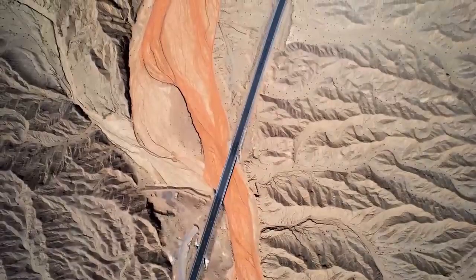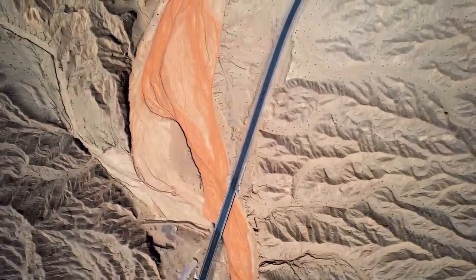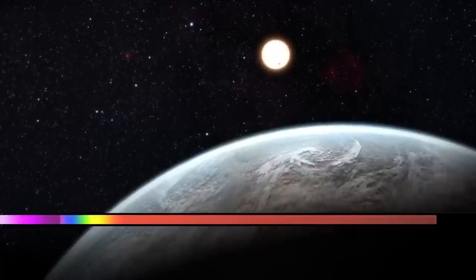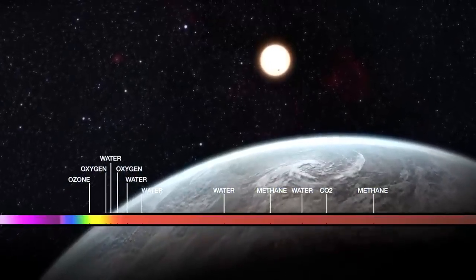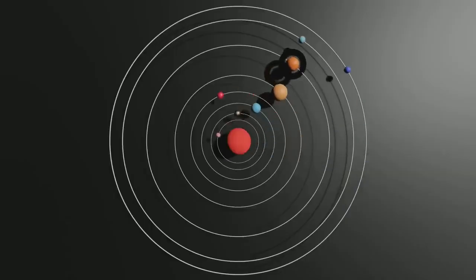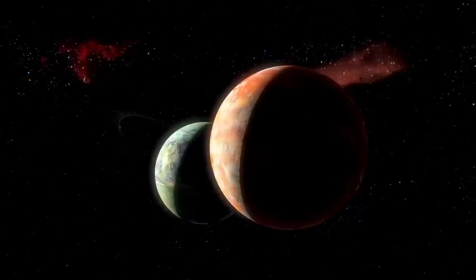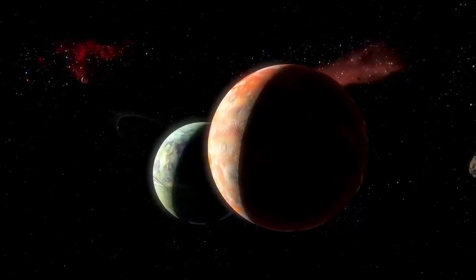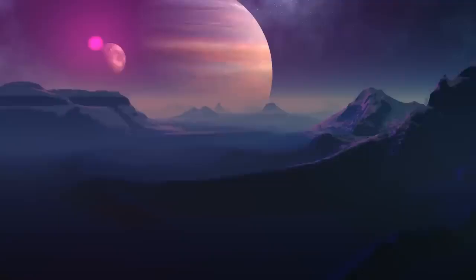To put this number in perspective, if each of these exoplanets were the size of a grain of sand, we would not only fill the Grand Canyon, but we would have enough to create a Grand Canyon 2.0 that would stretch for miles. About 20% of these celestial bodies have been classified as Earth-like. That means there's a one-in-five chance of finding a twin of our planet.